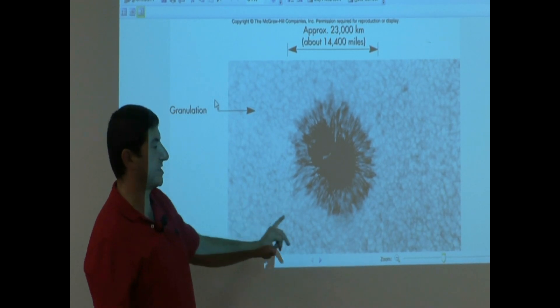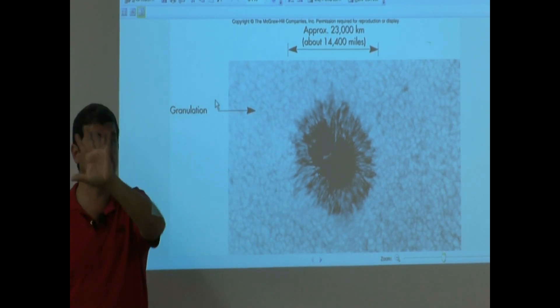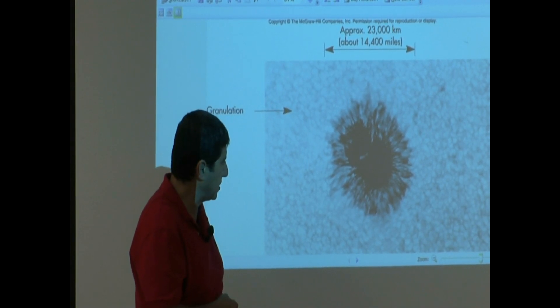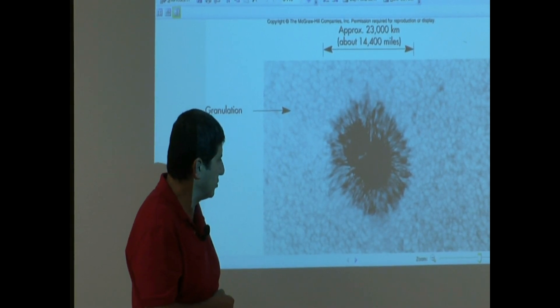The surface of the sun from the outside will look very smooth, but if you really look in, zoom in, and then you will see that it's actually very grainy-looking. This is called granulation.